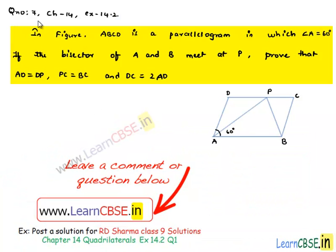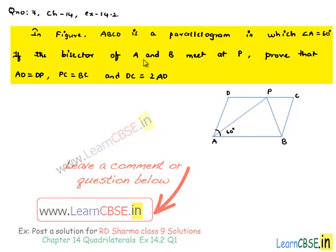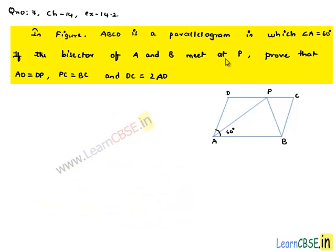Now, let us solve question number 7, chapter 14, exercise 14.2. In the figure, ABCD is a parallelogram in which angle A is equal to 60 degrees. If the bisectors of A and B meet at point P, prove that AD is equal to DP, PC is equal to BC, and DC is equal to 2 times AD.